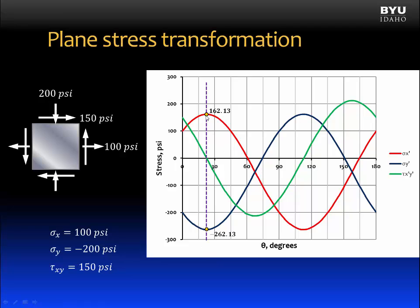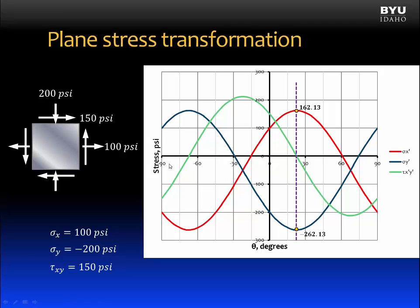Here are our two principal stresses on the graph, representing the maximum envelope — the maximum distance apart between the two stresses on the element. This means no normal stress will ever be greater than 162.13 psi or more negative than negative 262.13 psi. The rotation angle is 22.5 degrees. Rotating the element another 90 degrees reaches the principal stresses again, but this time the x and y faces have switched places. Also, when the element is rotated to the principal stress state, the shear stress shown by the green line is always zero.